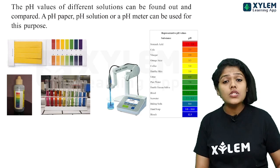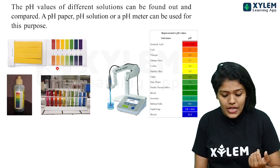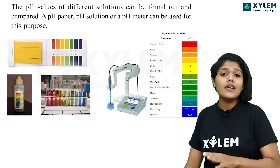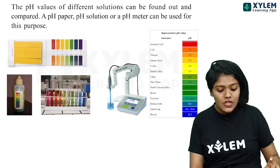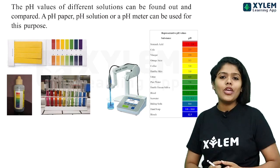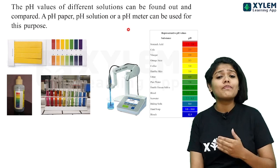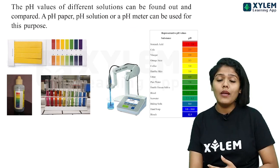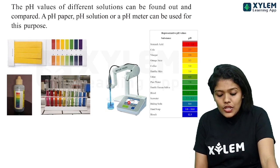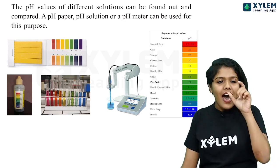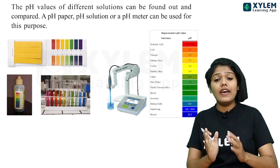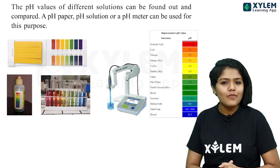You can use pH paper or a pH solution. When using a pH solution, it is added to the substance and a color change is observed. You can use the color chart to identify which category it belongs to. Even better, we can use pH meters — in school labs, you can dip the pH meter into a solution and the reading will be shown directly, easily telling you whether the substance is an acid or a base.